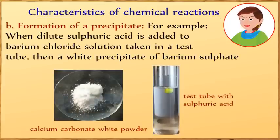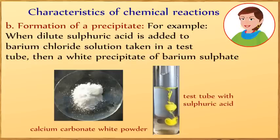Formation of precipitate. For example, when dilute sulfuric acid is added to barium chloride solution taken in a test tube, then a white precipitate of barium sulfate is formed.